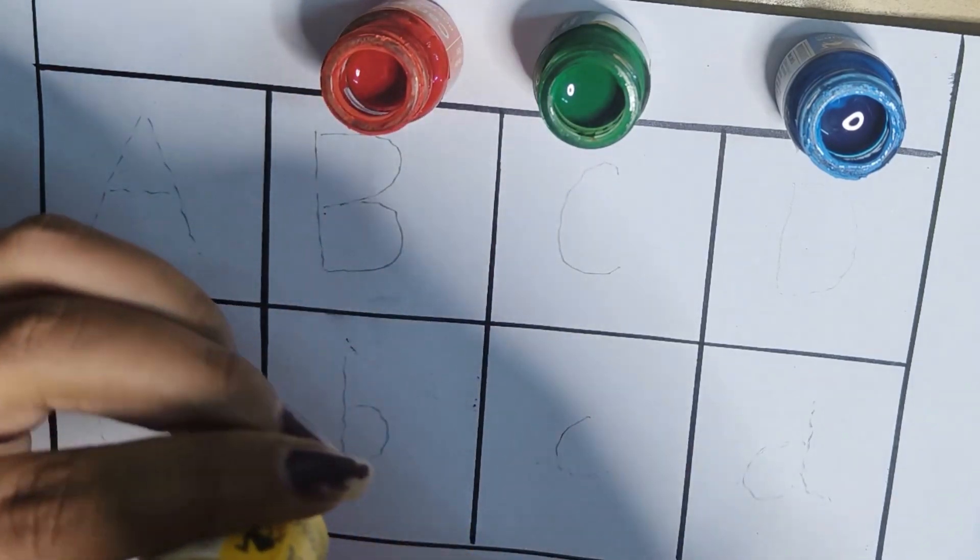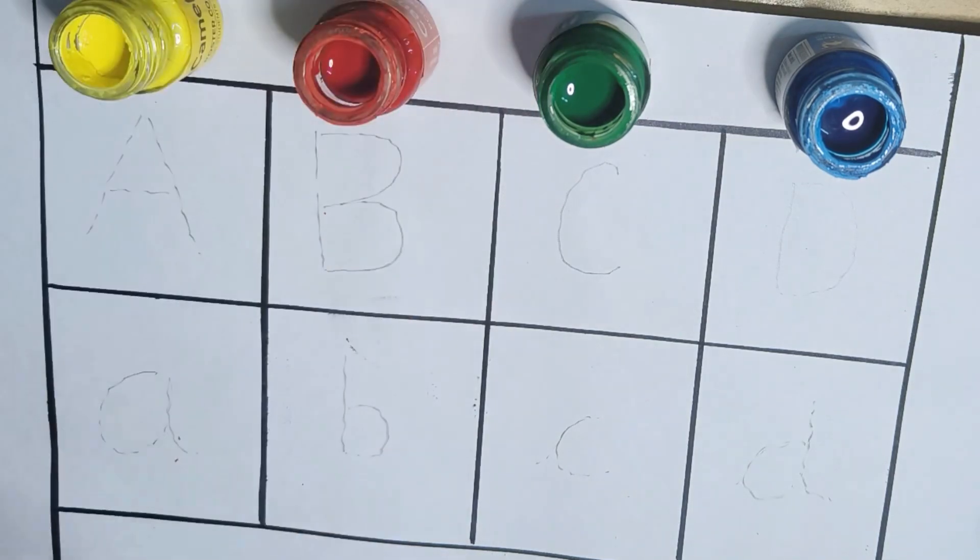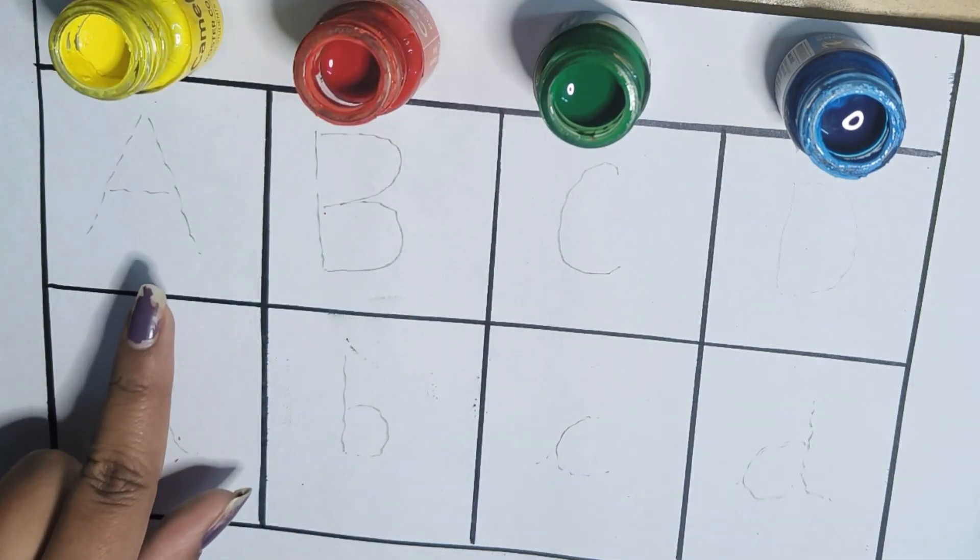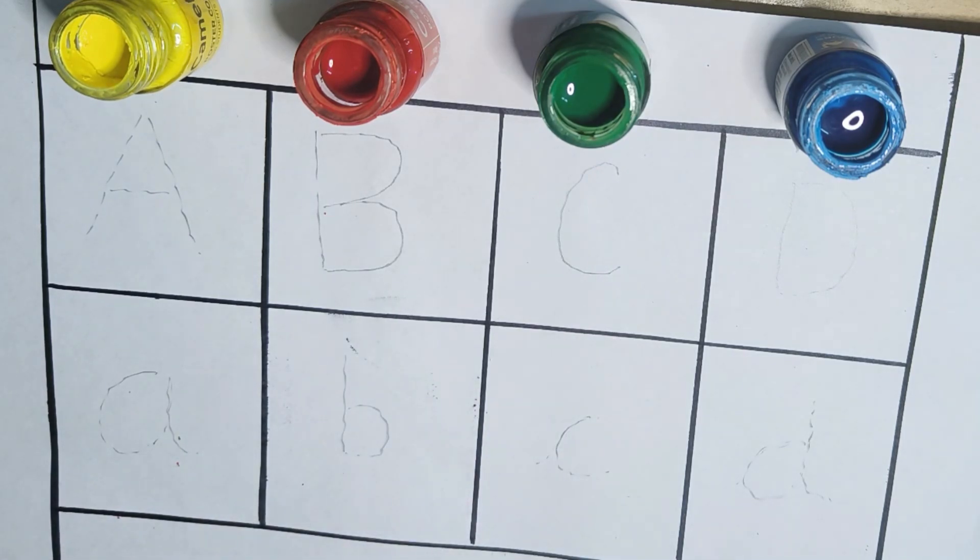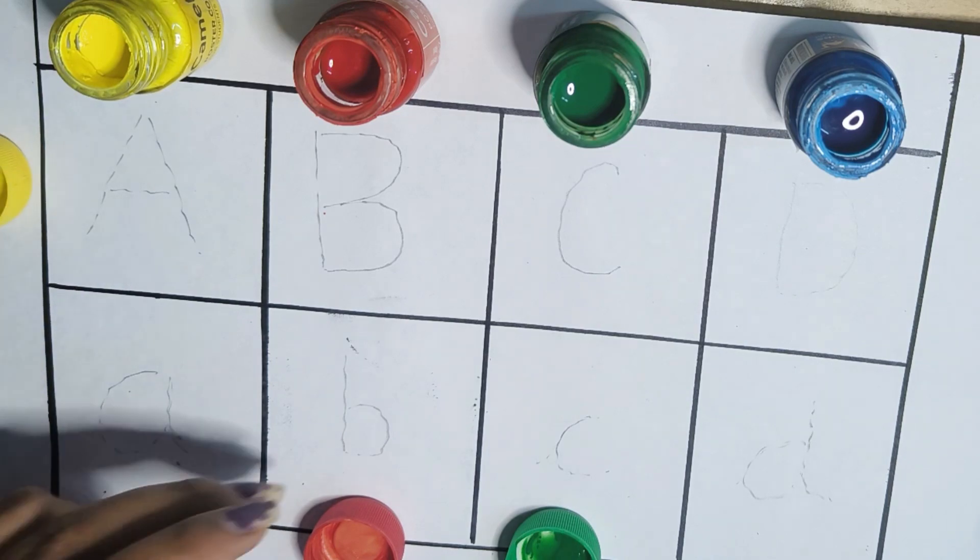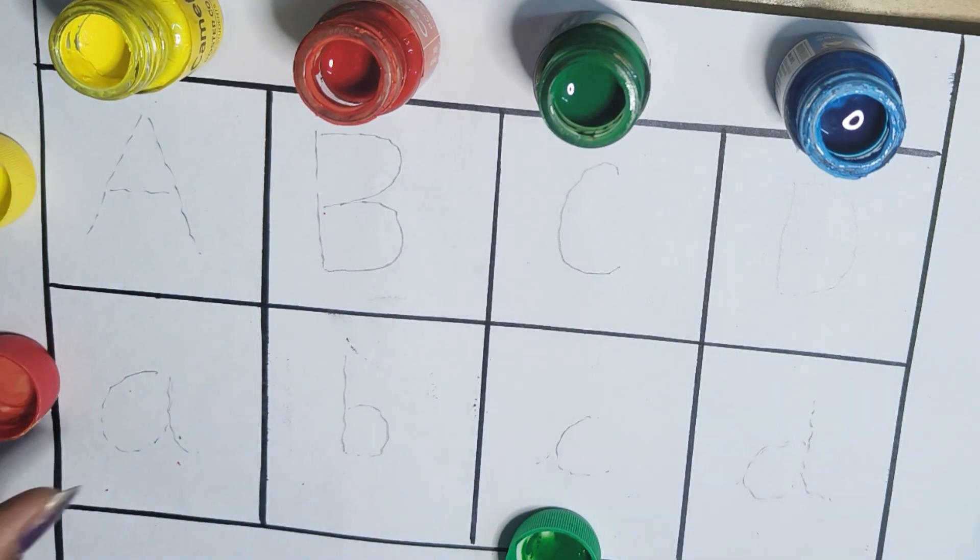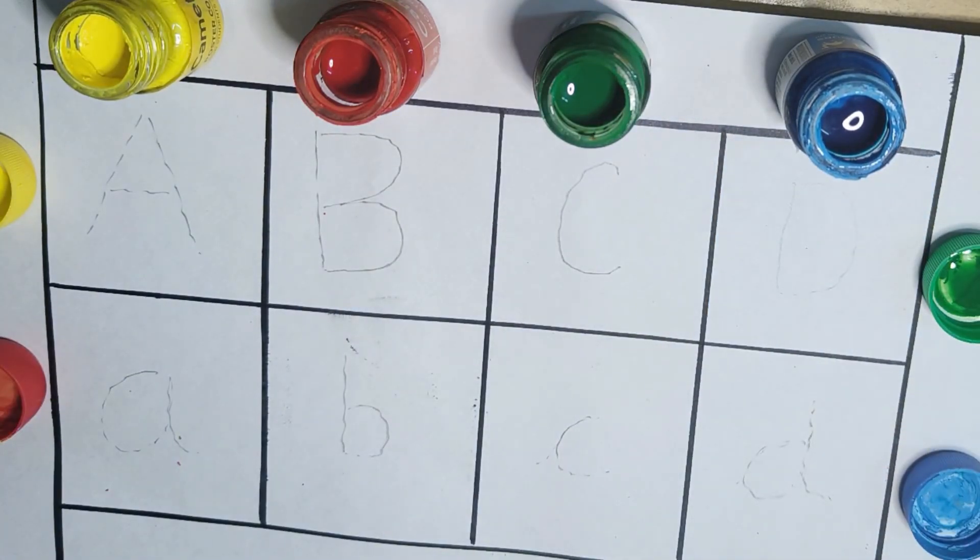Yellow color, this one is yellow color. This is A, here we have to write A, B, C, D. Yellow, red, green, blue.